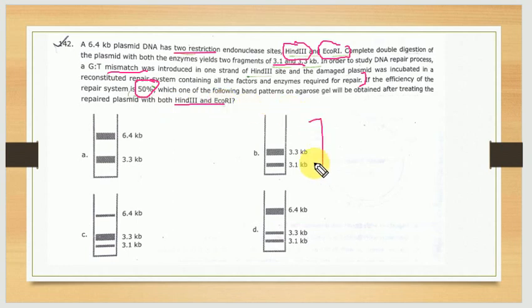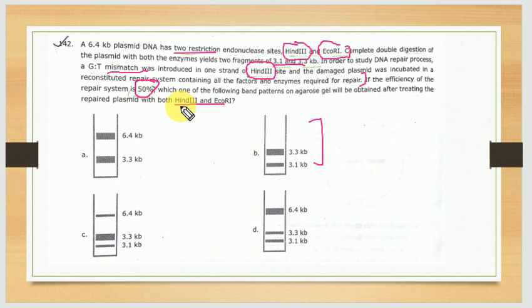Let's look at the solution. The 6.4 kb plasmid DNA has 2 sites and is completely digested to give 3.3 kb and 3.1 kb fragments. However, at the HIN3 site we have a mismatch introduced, and the repair system efficiency is 50 percent.